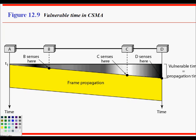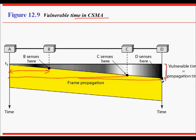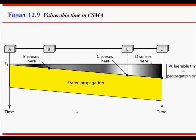The vulnerable time for CSMA is the propagation time. When A starts to transmit, the time it takes for B to sense the first bit is the vulnerable time for B. For D, which is farther away, it is longer. In the worst case, you must wait for the signal to travel to the other end — this propagation delay, tp, is the vulnerable time.